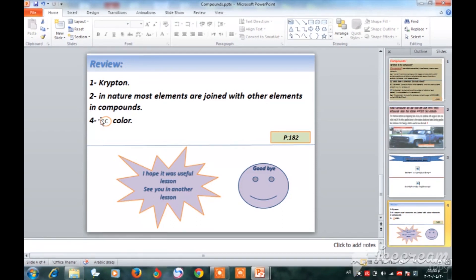Number four: which of these is not found in the periodic table? Name, atomic number, color, or chemical symbol? The correct choice is C, color.